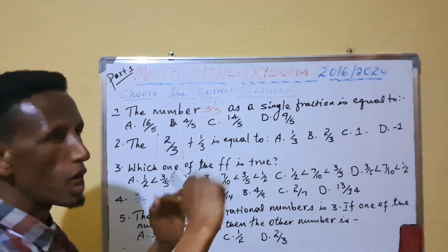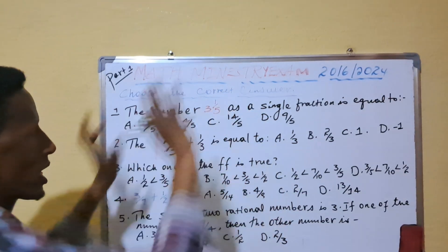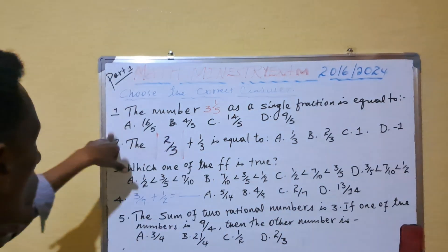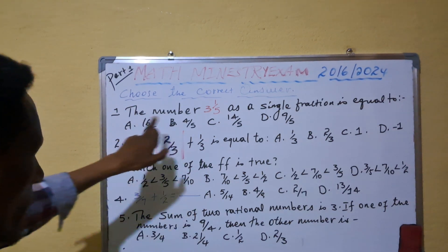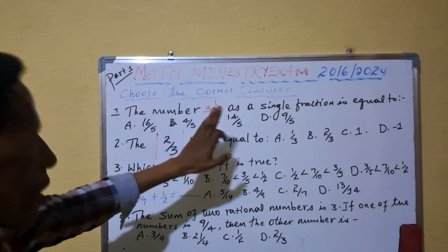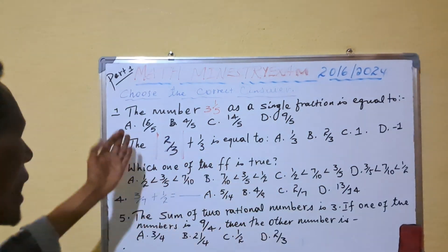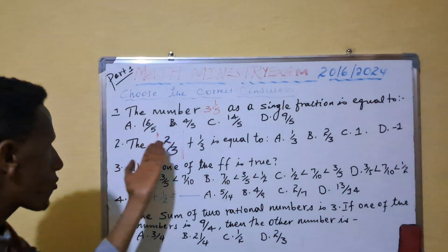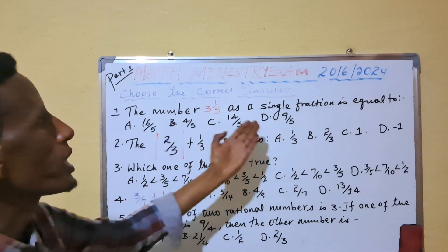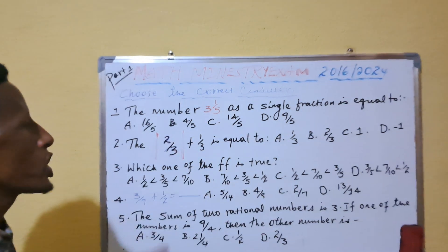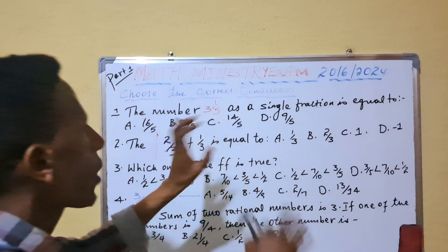Question number one says: the numbers 3 and 1 over 5 as a single fraction is equal to — A) 16 over 5, B) 4 over 5, C) 14 over 5, D) 9 over 5. The first thing we are going to do is we have to know about fractions.